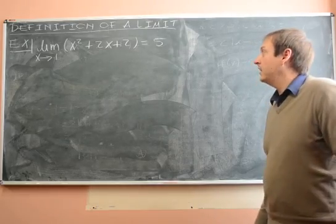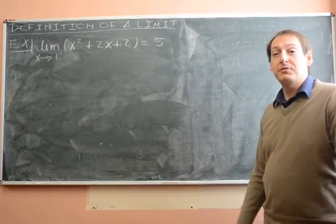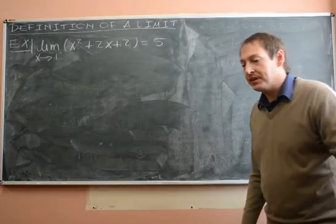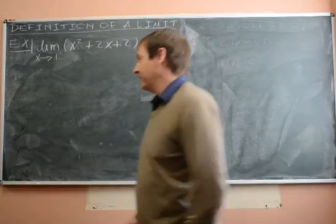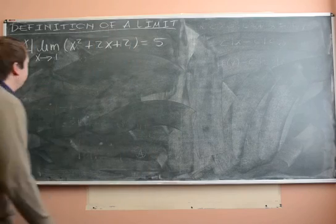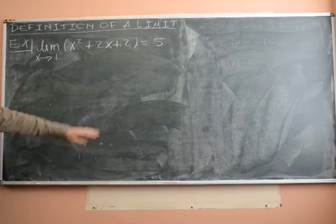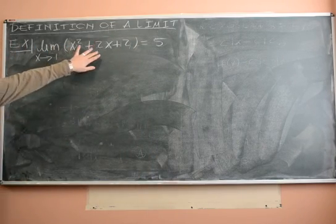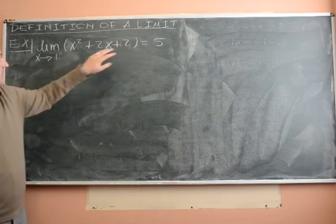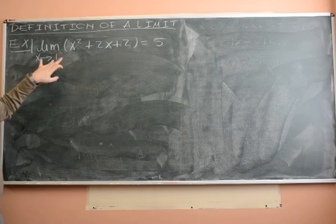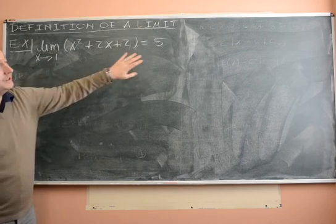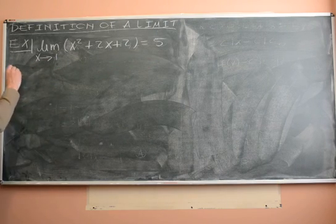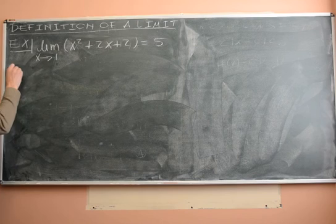Welcome back. Let's now look at another example where we use the definition of a limit. In this example, we want to prove that the limit of x squared plus 2x plus 2 as x tends to 1 is 5. So let's see — what do we have to prove?